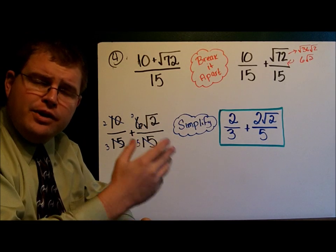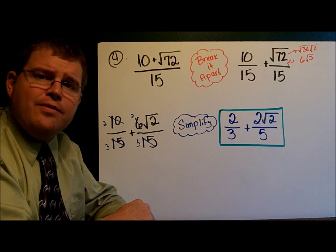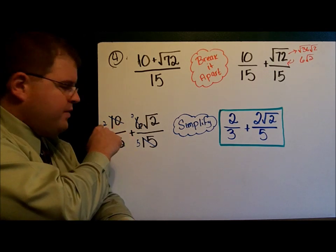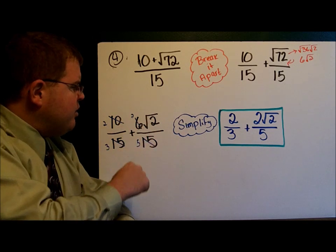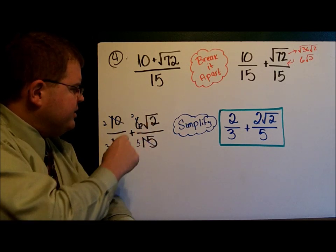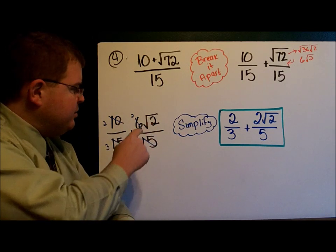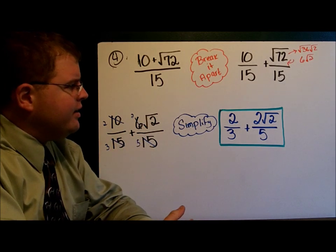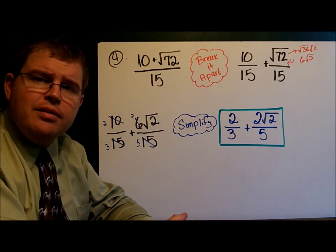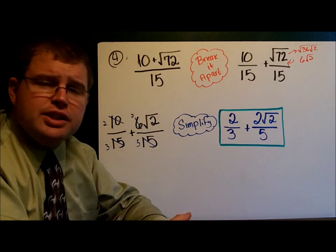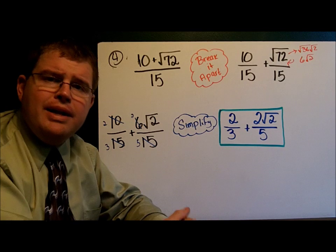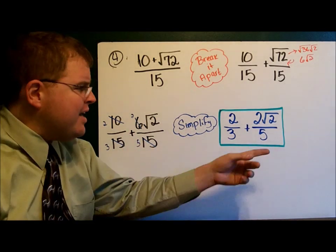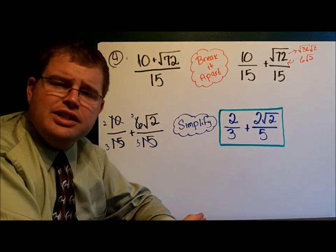Now that I've reduced my radical, I can go ahead and simplify the fractions. 10 over 15 is 2 over 3. 6 square roots of 2 over 15 is 2 square roots of 2 over 5. I simply reduce the 6 and the 15. That leaves me with 2 over 3 plus 2 square roots of 2 over 5. And because I don't have common denominators, I can't put the pieces back together. I simply leave it just like that.